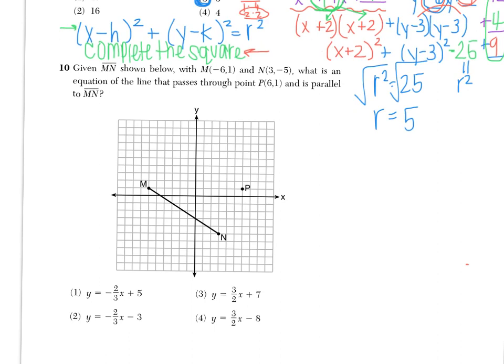Number 10 says, given MN the segment below with M and N as coordinates, what is the equation of the line that passes through point P and is parallel to MN? So we have to do a little bit of investigation here. First we need to figure out what the coordinates of P are, and we need to figure out the slope of MN. Because we need it parallel, our new line parallel to this, we need to have the same slope.